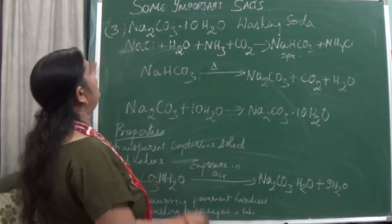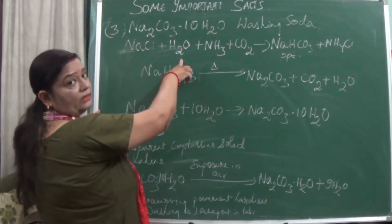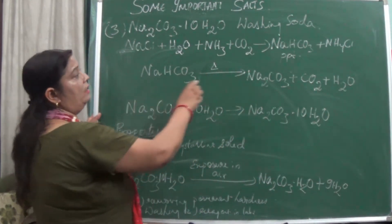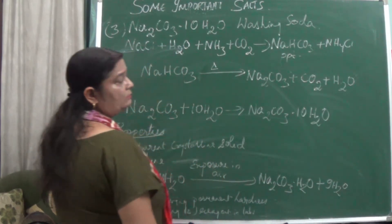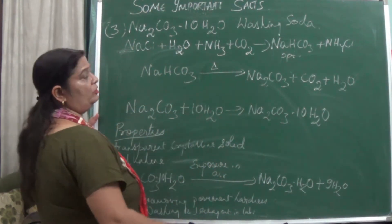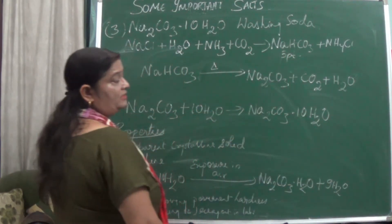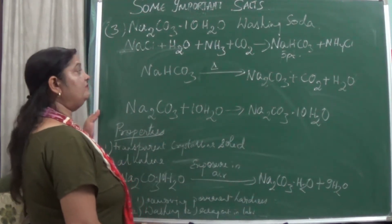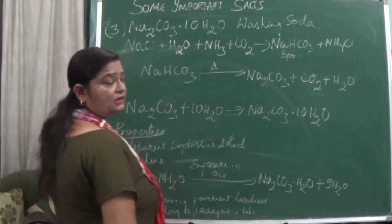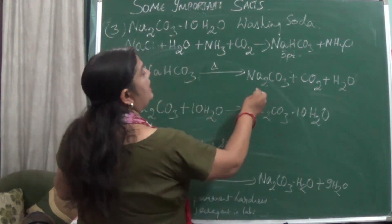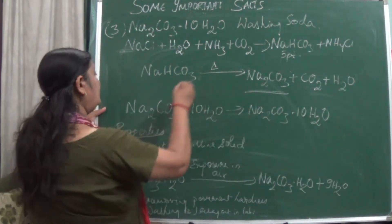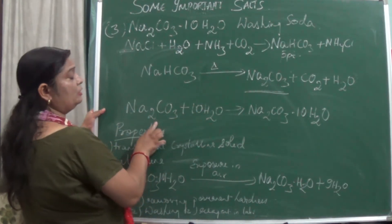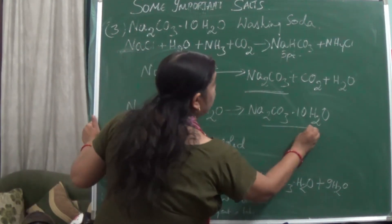To prepare washing soda: first, from the baking soda reaction — sodium chloride + water + ammonia + CO2 — we get NaHCO3 and ammonium chloride. NaHCO3 has less solubility so it precipitates out. We then take this sodium bicarbonate and heat it — CO2 and water are released and we get sodium carbonate (Na2CO3). Then we recrystallize it by adding 10 molecules of water to get washing soda.